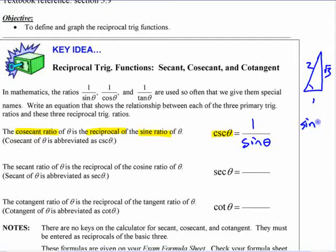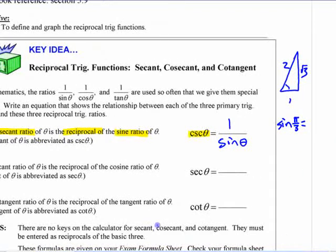If you know that the sine of pi over three is, what's the sine of pi over three if you use that triangle? This bigger angle is pi over three. What's the sine of pi over three? Root three over two, right? If you know that that's true, the cosecant of pi over three, just by definition that it's the reciprocal, what's its ratio? If you know a fraction for sine of pi over three, you know that the cosecant has to be the reciprocal. Yeah, two over root three. Okay, these are reciprocals here. Those ratios are reciprocals.